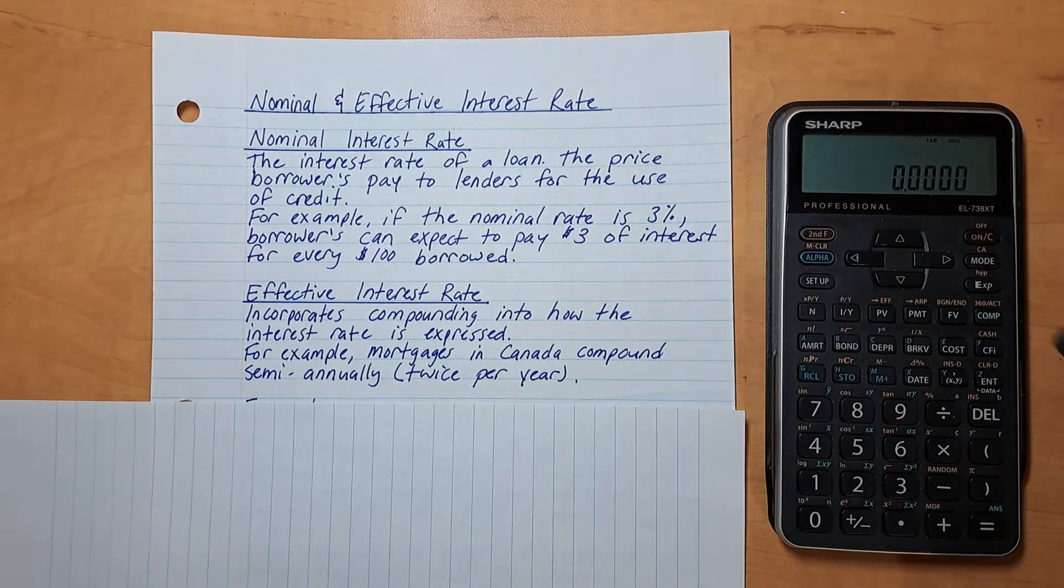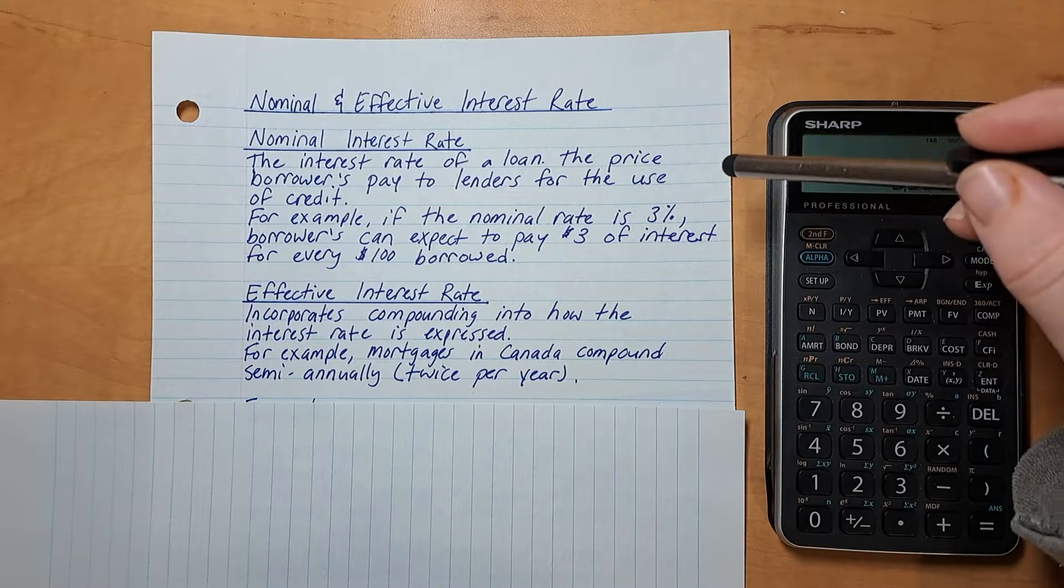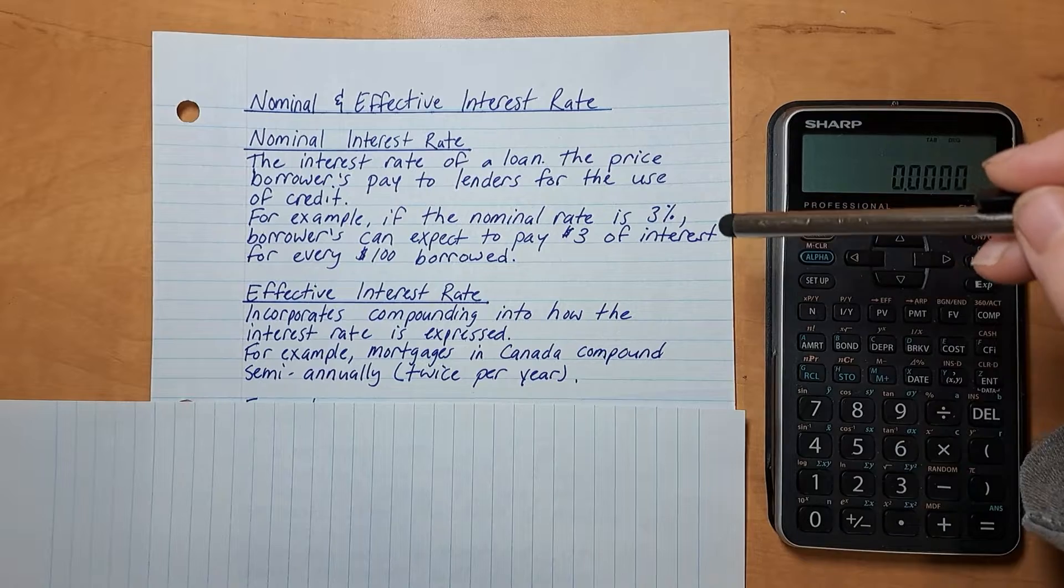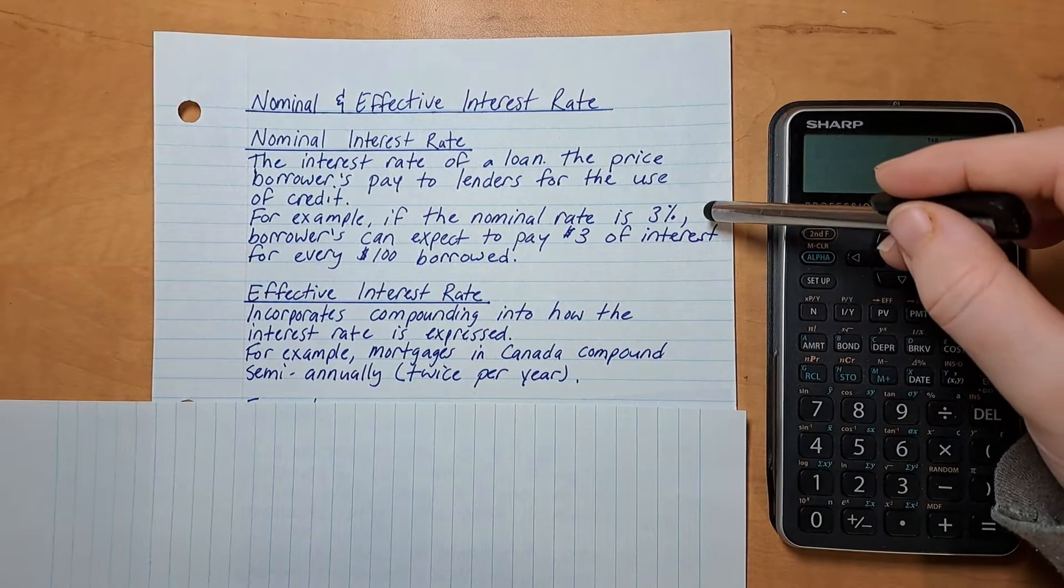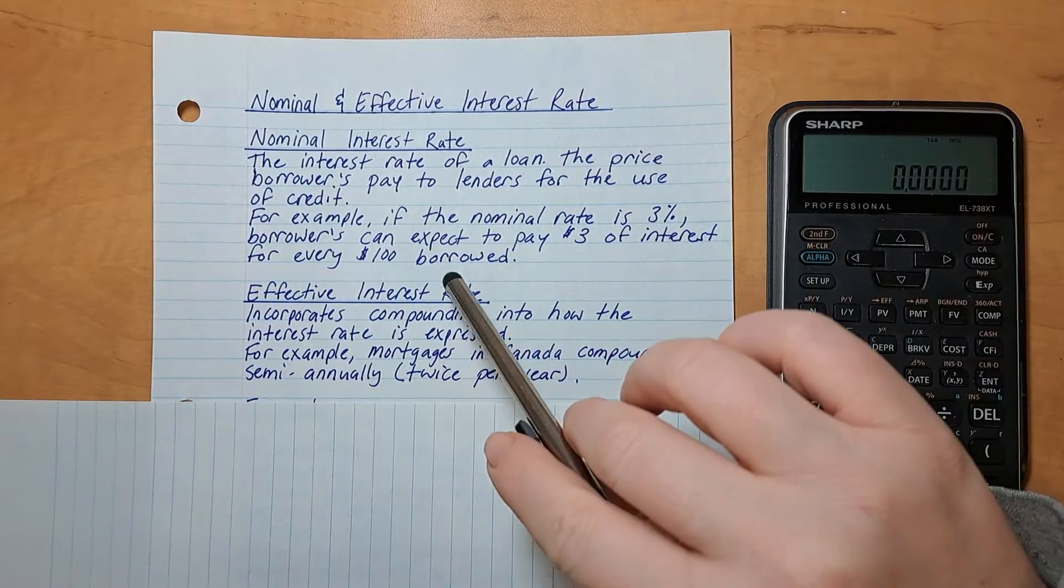Nominal and effective interest rates. Let's take a look. The nominal interest rate is the interest rate of a loan. It's the price borrowers pay to lenders for the use of credit. For example, if the nominal rate is 3%, borrowers can expect to pay $3 of interest for every $100 borrowed.